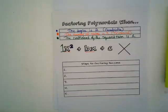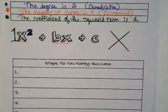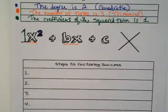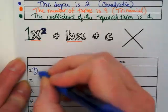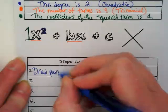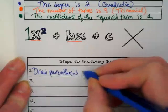So now let's talk about the steps. The steps to factoring success. Step one is draw parentheses and fill in the variable.